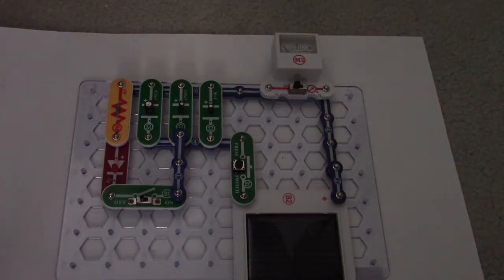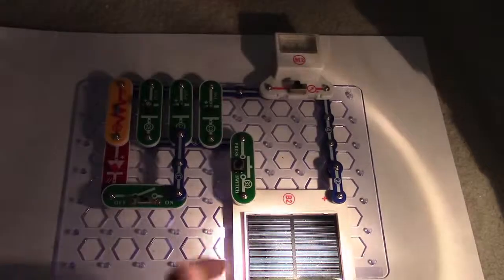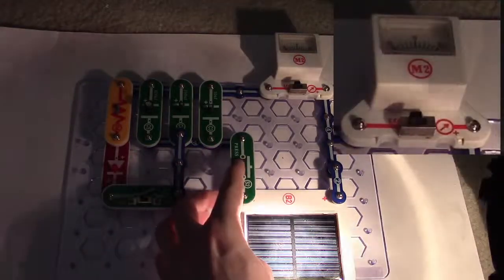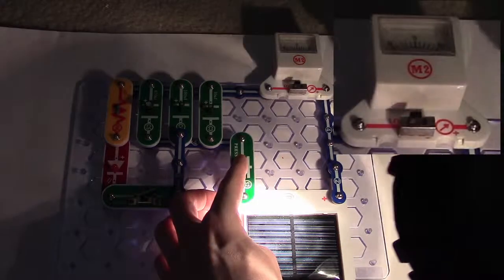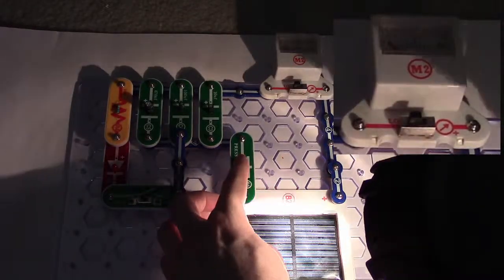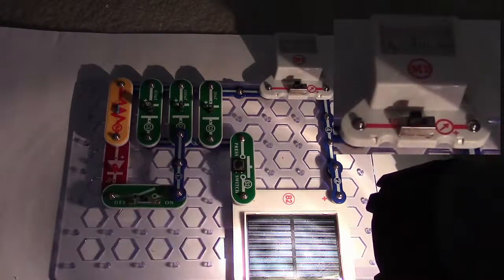Now if I take a strong light source and put it on our solar panel and then push this button, our meter deflects all the way over and then it's going down. That indicates that our capacitor bank is now fully charged.